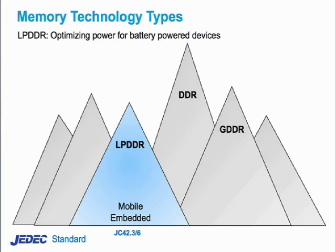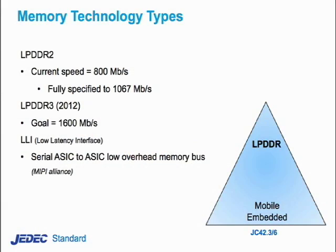If you optimize for power, especially for battery-operated devices, you get LPDDR. This is a volatile memory whose architecture and interfaces have been optimized to reduce power consumption. The focus is on being able to enter very low power modes and exit them very quickly, and to adjust clock rates to lower or higher values depending on the system load. On the mobile side, LPDDR2 is the mainstream memory technology, currently running at about 800 megabits per second.